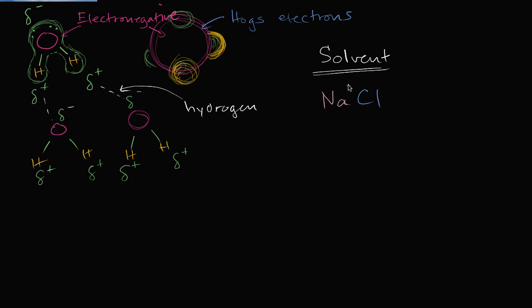The sodium has a positive charge because it has an electron stripped from it. The chloride is an anion — it has a negative charge because it gains an extra electron. They are attracted to each other; this is called an ionic bond. But if you put sodium chloride in water, something very interesting happens. Take some table salt, put it in water, and it will dissolve.